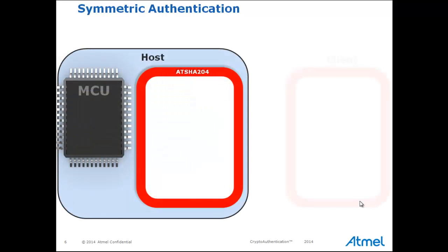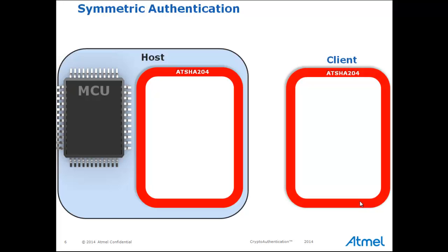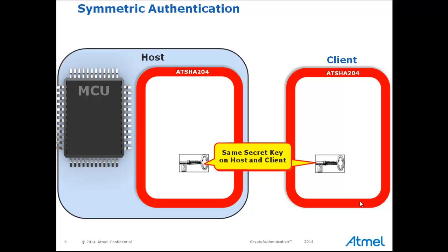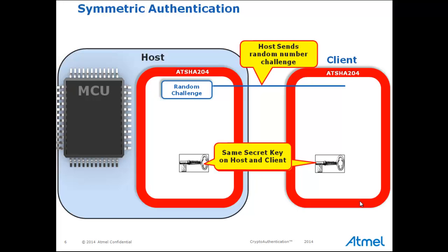This diagram shows an authentication process between a host and client called challenge-response. In this case, both the client and the host have an ATSHA204A device inside, and each device has the same secret key. The process starts when the host sends a random number — called the challenge — from the ATSHA204A's random number generator to the client. It does this at the time it wants to verify if the client is real, such as when an ink cartridge is inserted into a printer. This step is called the challenge.